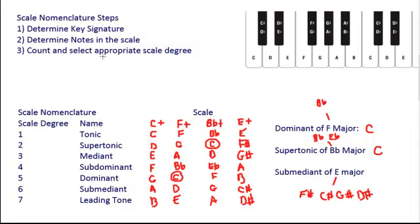So having written out all the notes in the scale, we can count and select the appropriate scale degree. The submediant of E major is the sixth. So you can count down six and determine that the submediant of E major is C sharp.